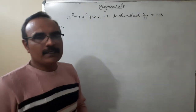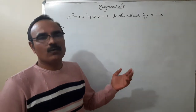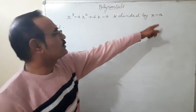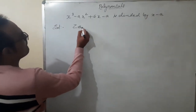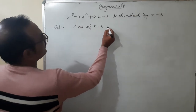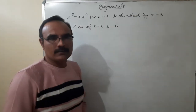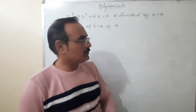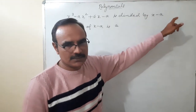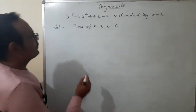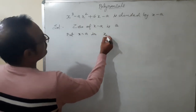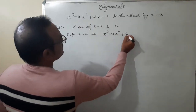To find the remainder we can use the remainder theorem. The remainder theorem says: if x minus a is a linear polynomial, what is the zero of it? The zero of x minus a is a. As I told you in my last lecture, whatever value of x makes the result zero is the zero. Here, putting x equal to a gives a minus a equals zero, so the zero is a. Now put x equal to a in x³ minus ax² plus 6x minus a.